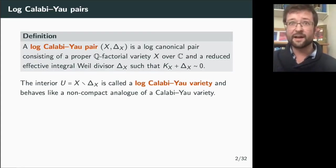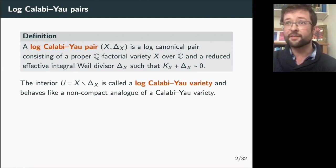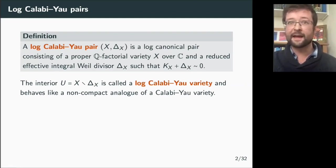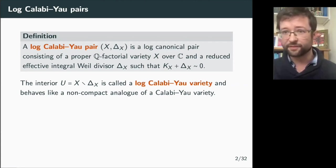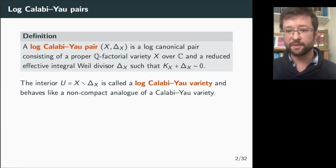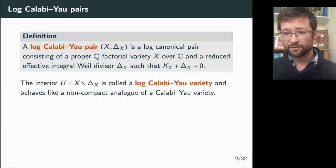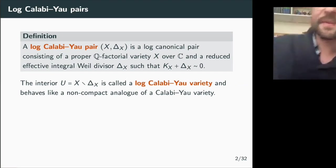A log-Calabi-Yau pair is a pair that has log-canonical singularities — a minimal requirement on how bad the singularities can be from the minimal model program. Here X is a proper Q-factorial variety over the complex numbers, and delta is a reduced effective integral Weil divisor that is anti-canonical, so K_X plus delta_X is linearly trivial. You could generalize by allowing a Q-divisor or Q-linear equivalence, but some results I discuss today require restricting to the integral Weil divisor setting.